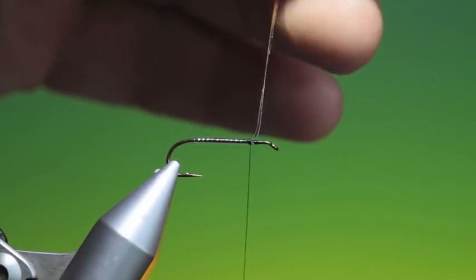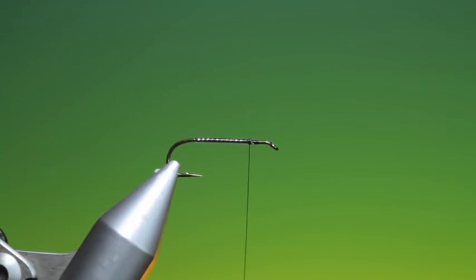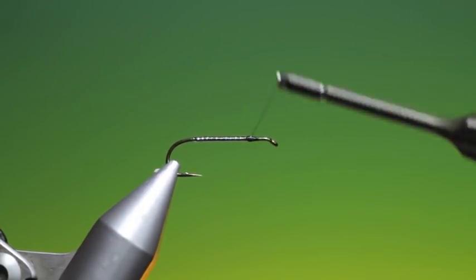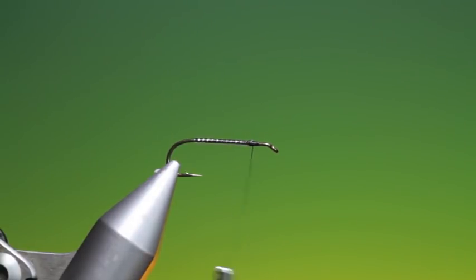Get your tinsel scissors, trim that off and make a few turns there. This is important that we have enough room here for the Hornburg, for the big hackle that's going on later.